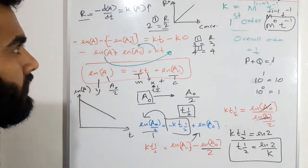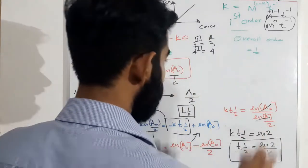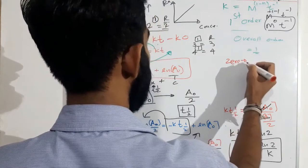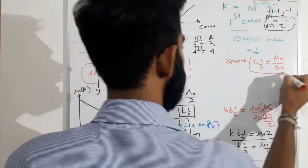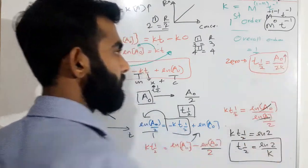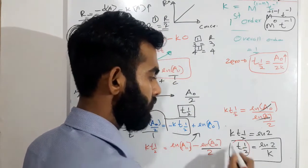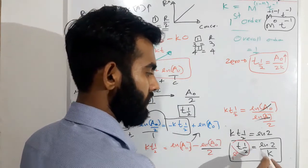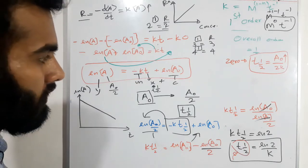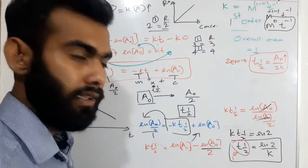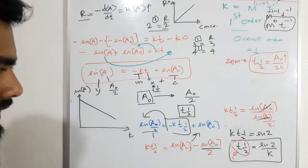What can we say about that? We saw that in zeroth order reaction, T half equals A₀ divided by 2K — so T half was dependent on A₀. If we increase initial concentration, T half increases. However, in first order reactions, T half is not affected by the initial concentration. That's all about the half-life of first order reaction. I will move on to second order reaction as our final discussion.